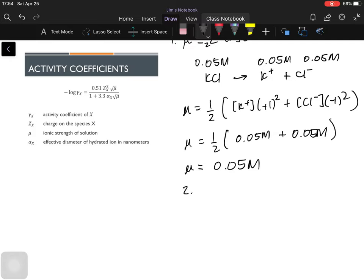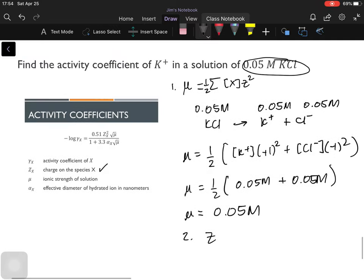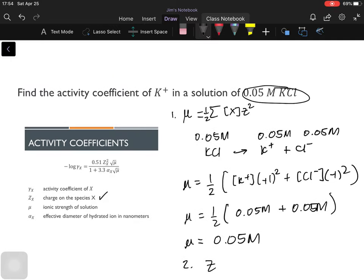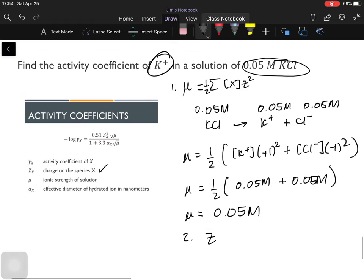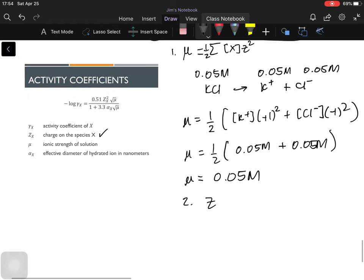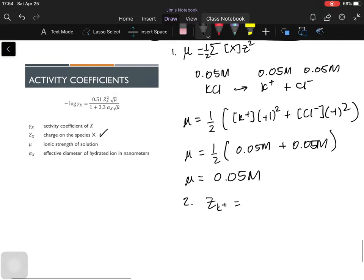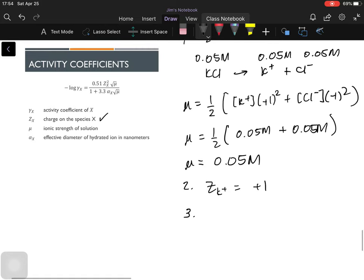Second one, we have to know the charge of your species X. So looking at the problem, the ion of interest is potassium ion. So what is the charge of potassium ion? Of course, it's positive 1. So we're done.